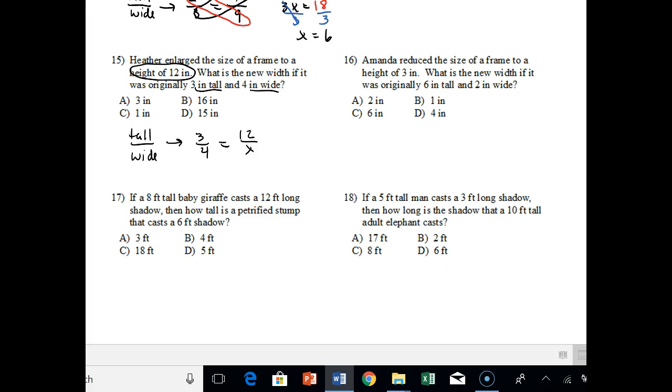So we're going to go ahead and say 12 times 4 and 3 times x. So I'll just, I like to put the variable first. So I'll put 3x equals 12 times 4 is 48. And then I'll divide both sides by 3. And we're going to go ahead and say 12 inches tall.